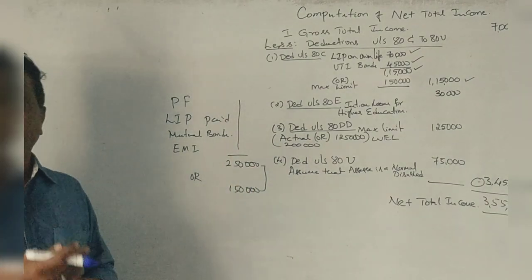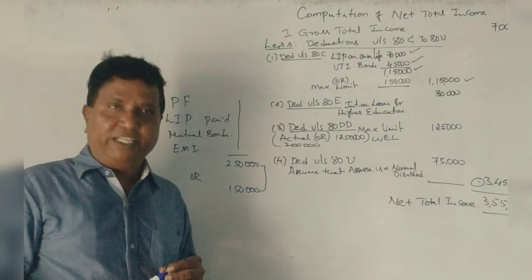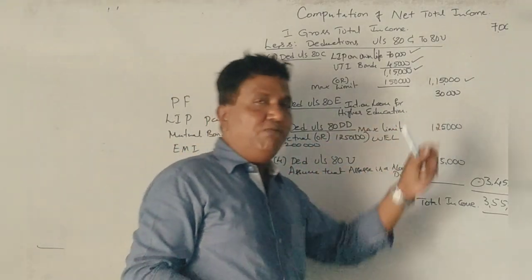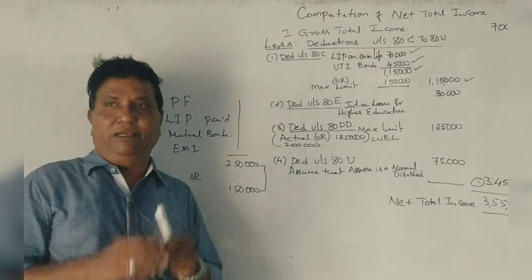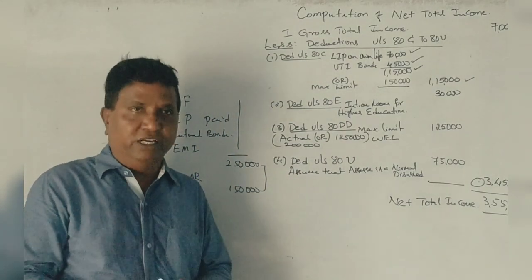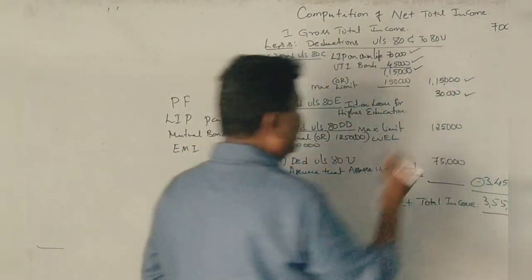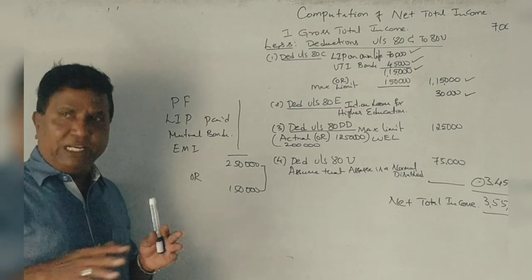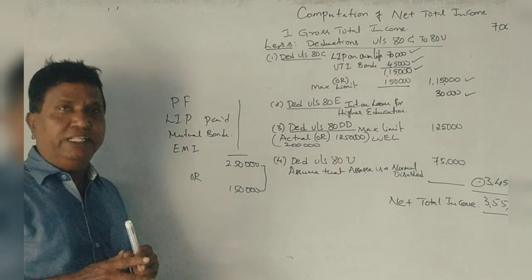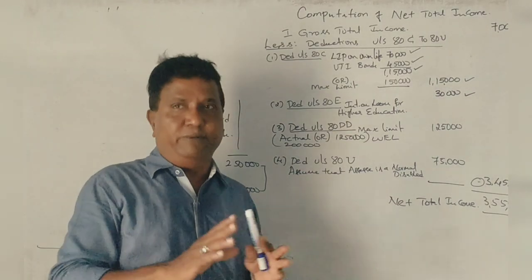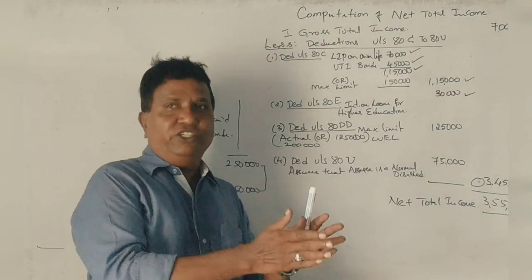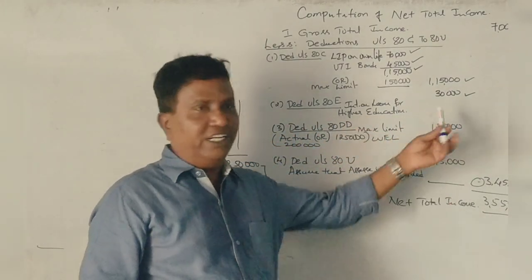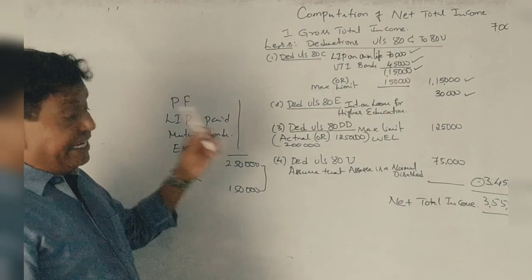Next, for higher education loan interest under Section 80E — interest on education loan. The interest deduction is available for up to seven years.